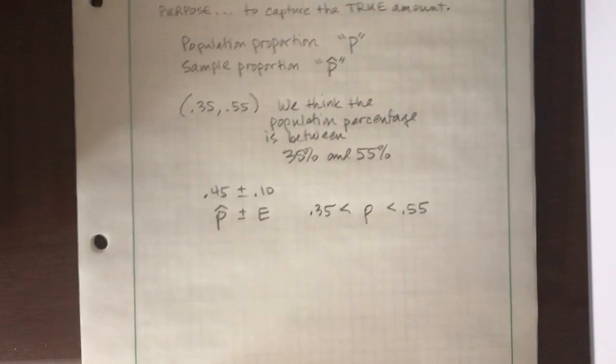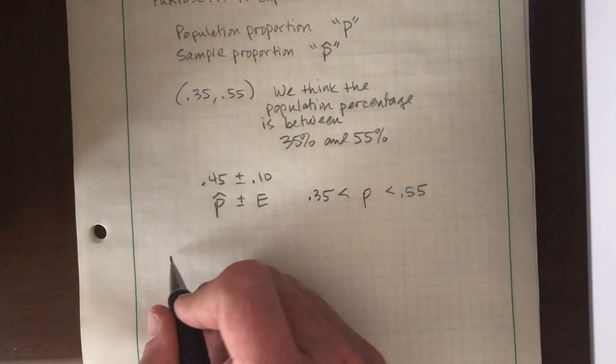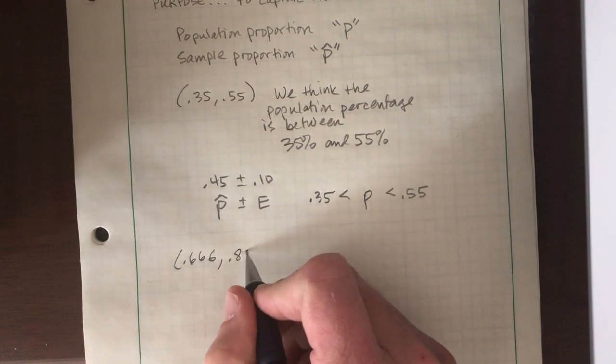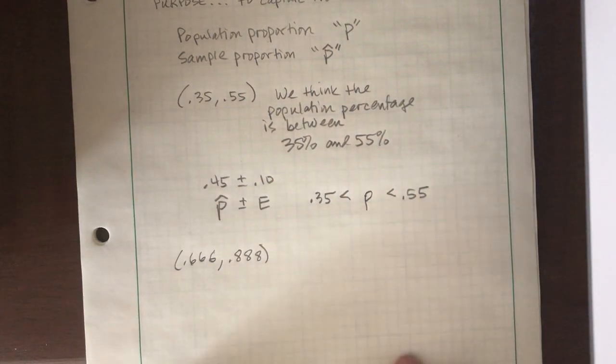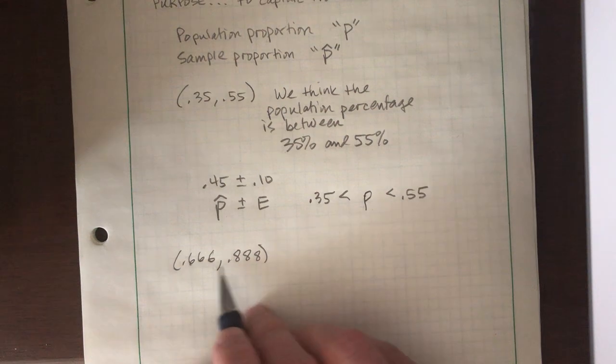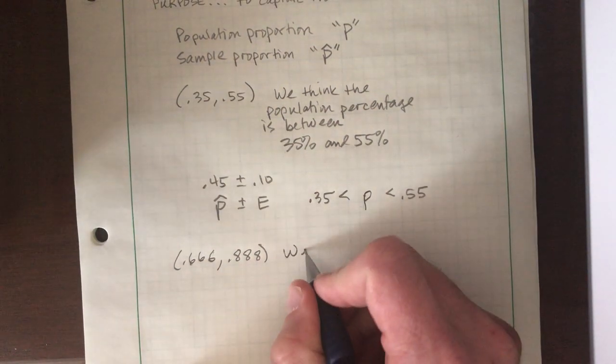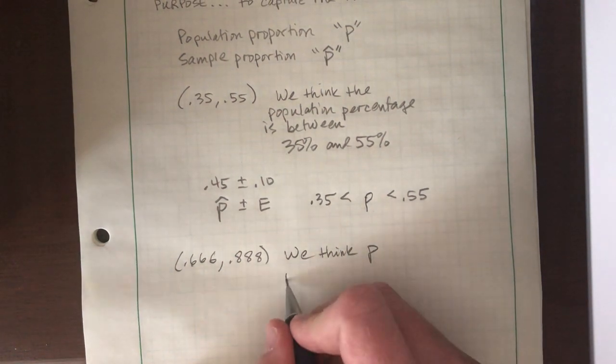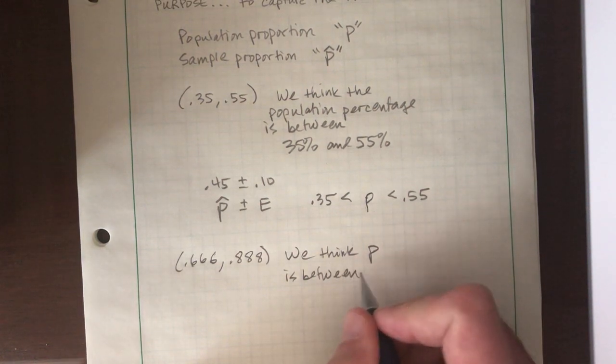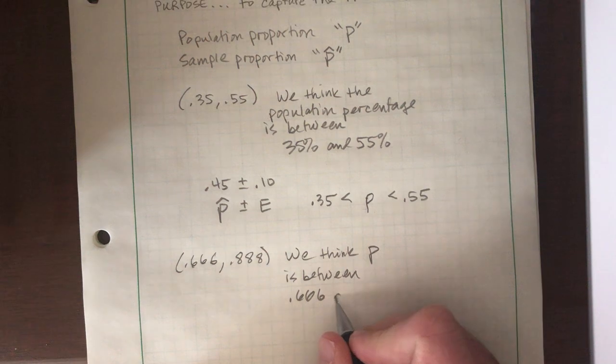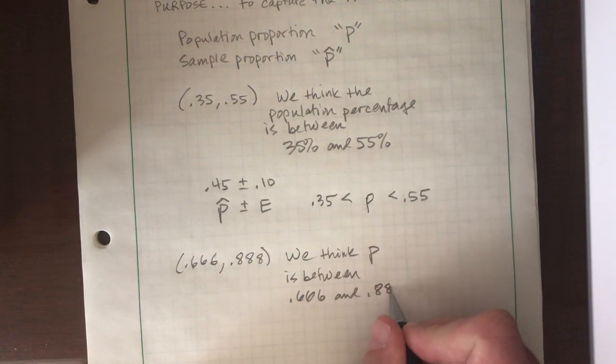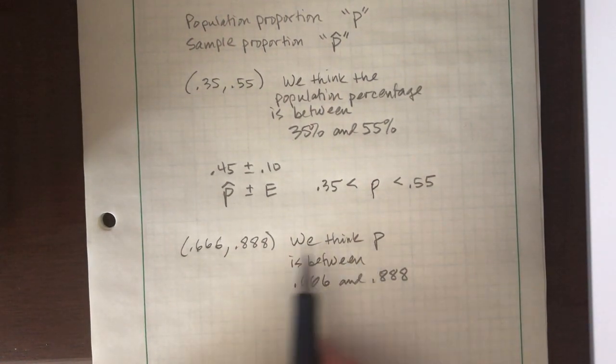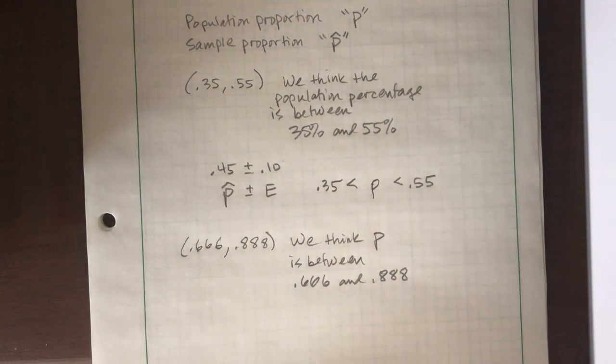All right, so let's try another example. If we saw 0.666 comma 0.888. First of all, what is this telling me? What we can say is that we think the population proportion p is between 0.666 and 0.888. That's what ultimately matters here. What does this interval tell me is we think the population proportion is captured between those two numbers.